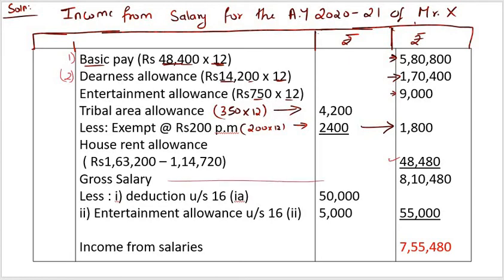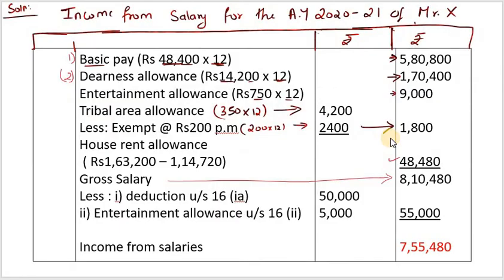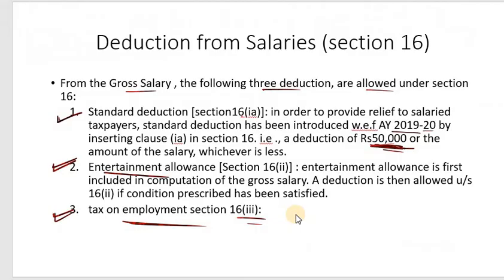After arriving at gross salary, we apply deductions under Section 16. Under Section 16(1a), the standard deduction is ₹50,000 or the salary amount, whichever is less. For this government employee, the standard deduction of ₹50,000 is available.